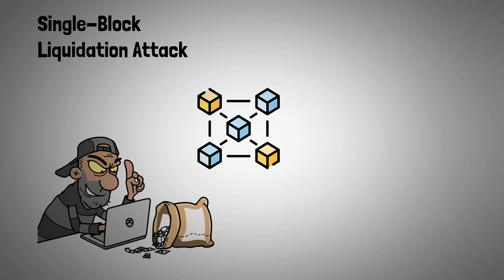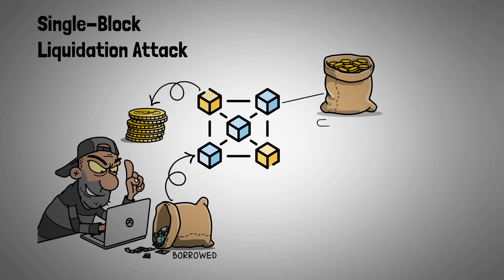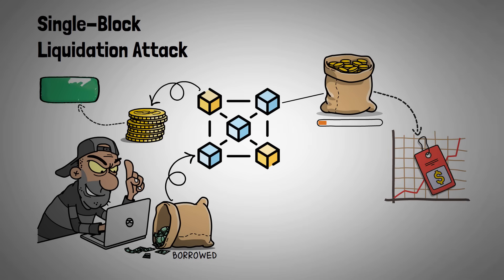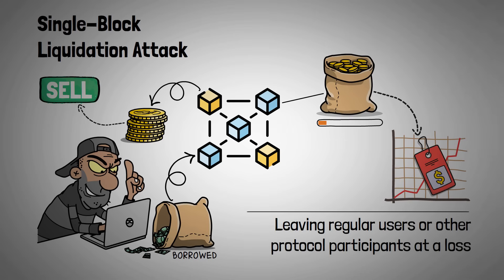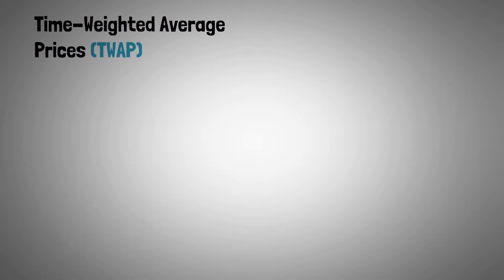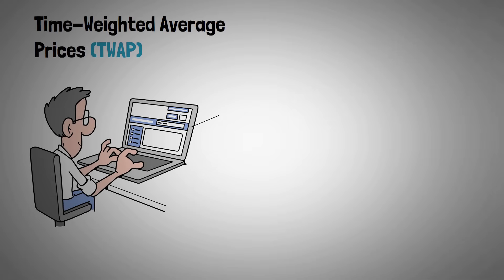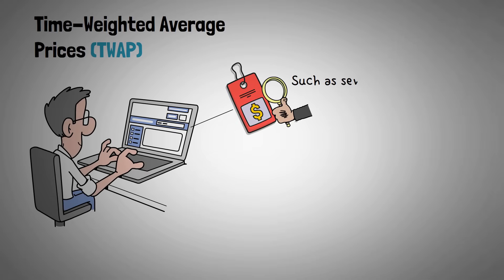Another sophisticated tactic that can fall under MEV involves a single block liquidation attack. In this scenario, a malicious actor can manipulate the price of a token within a single block, often using flash loans to momentarily borrow millions of dollars and buy massive amounts of an asset, which would then trigger automated liquidations in lending protocols that rely on on-chain price feeds. Once the liquidations go through and the attacker profits, they can sell back their tokens to revert the price back to its normal level all within the same block, leaving regular users or other protocol participants at a loss. To combat this, many DeFi projects have started using time-weighted average prices, or TWAPs, instead of just the latest on-chain spot price. A TWAP measures the average price of an asset over a specific period, such as several blocks or even multiple minutes, making it much harder to manipulate within a single block.